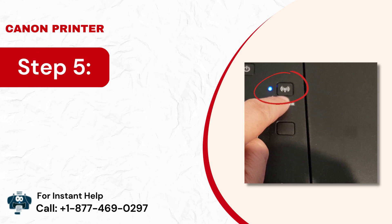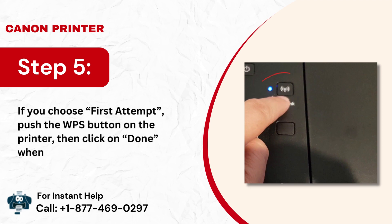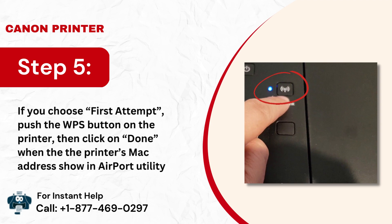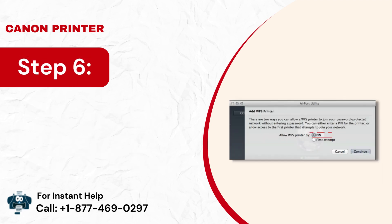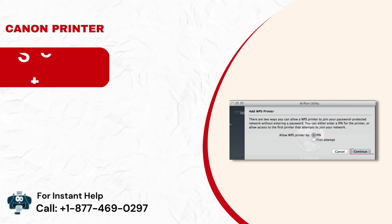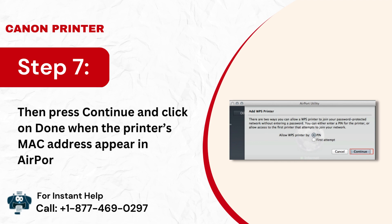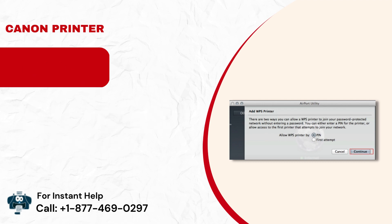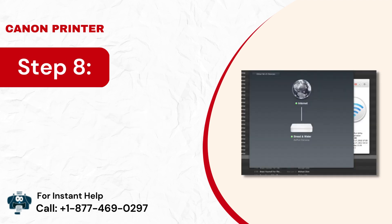Step 5: If you choose First Attempt, push the WPS button on the printer, then click on Done when the printer's MAC address shows in Airport Utility. Step 6: If you choose PIN, enter the PIN number listed in the printer's documentation. Step 7: Then press Continue and click on Done when the printer's MAC address appears in Airport Utility. Step 8: Close the Airport Utility.